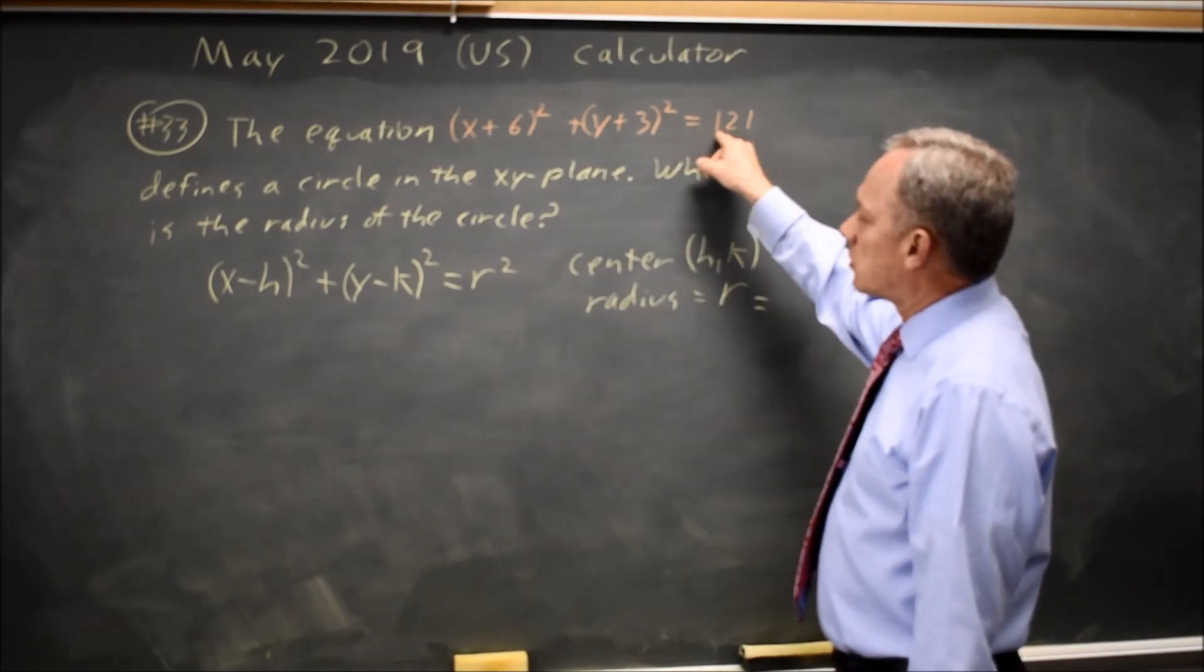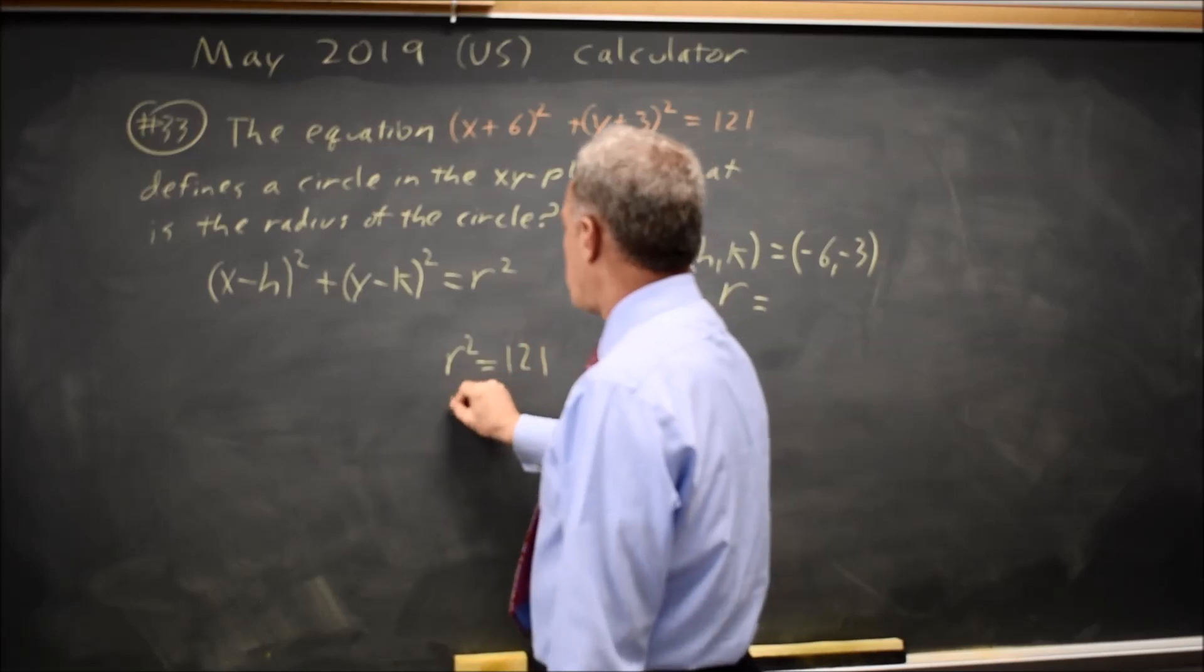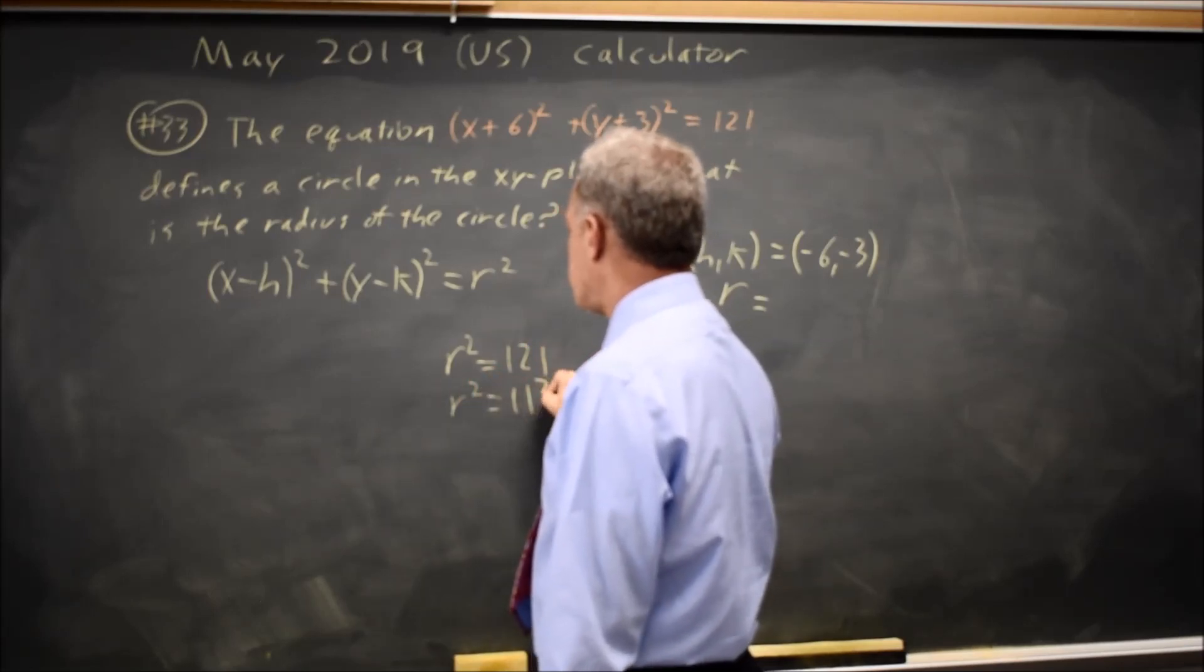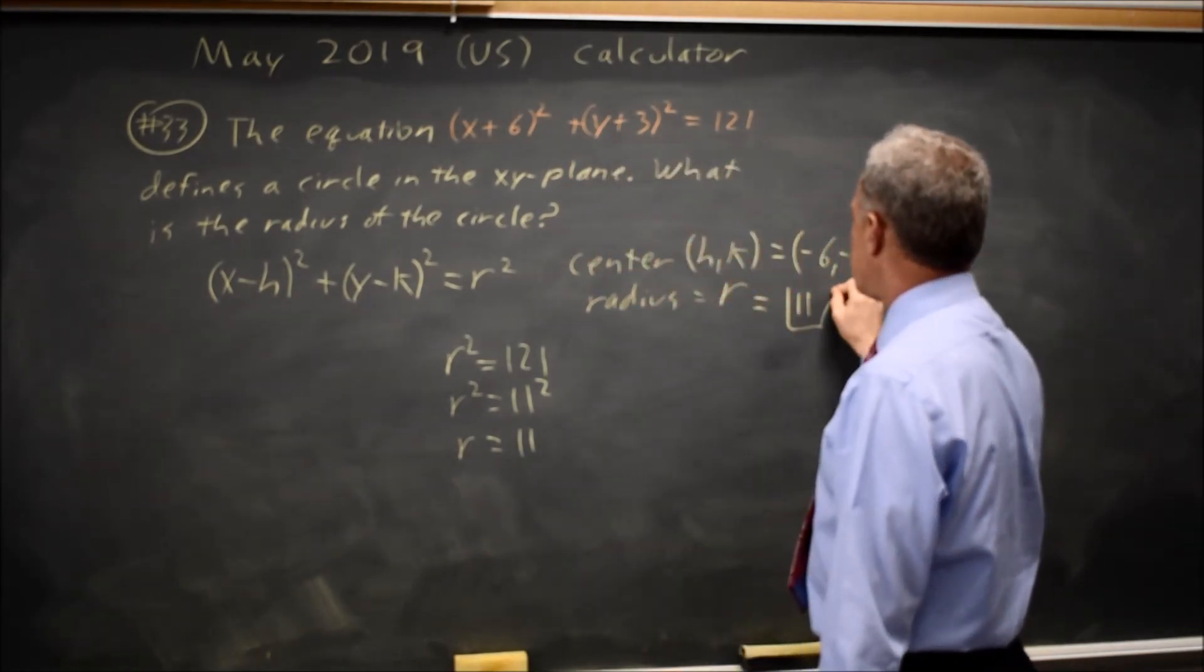R² equals 121, and 121 is 11 squared, so R equals 11. The radius of the circle is 11.